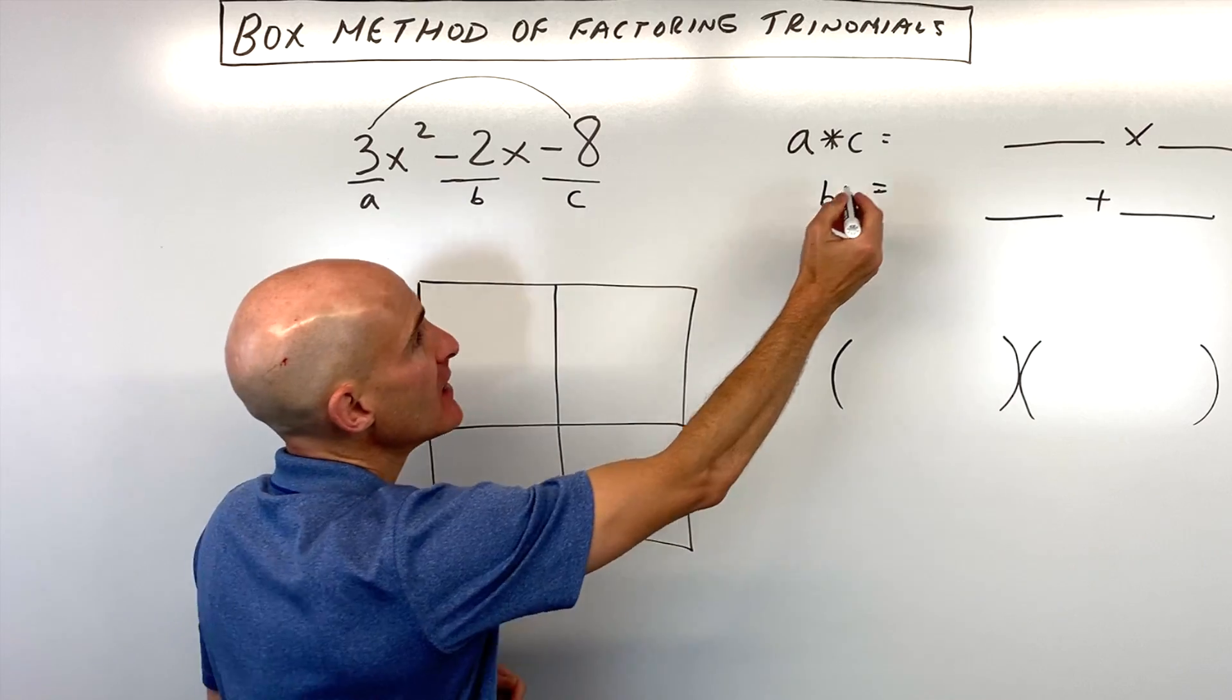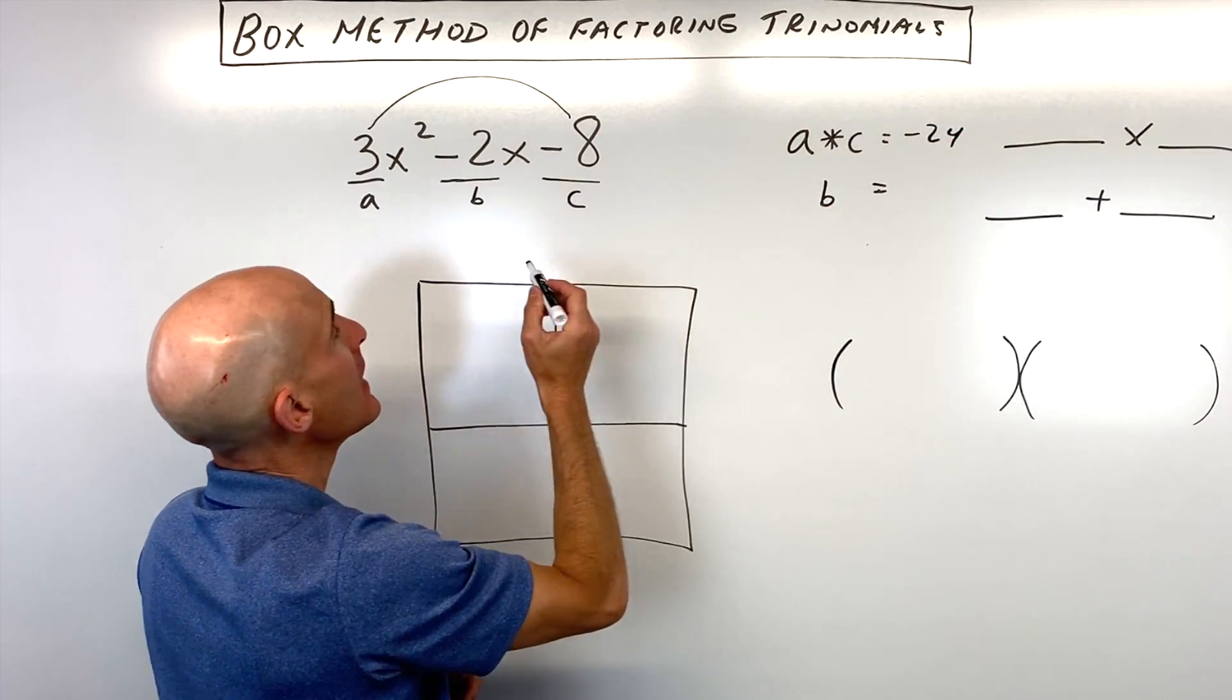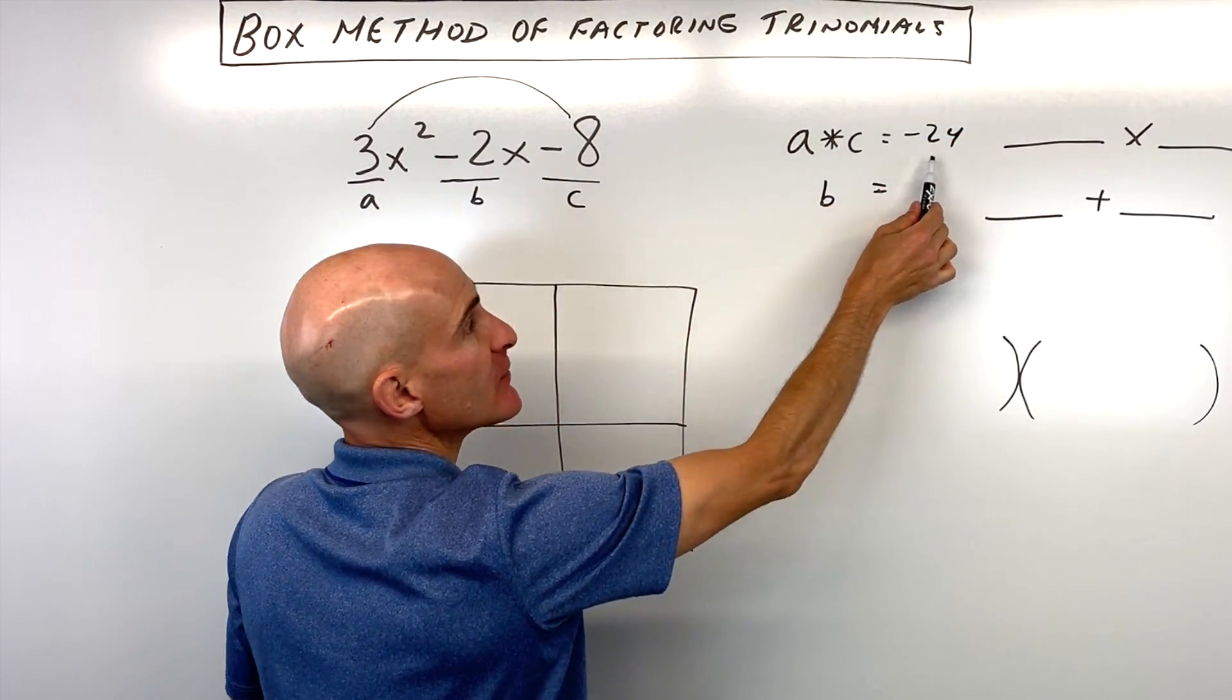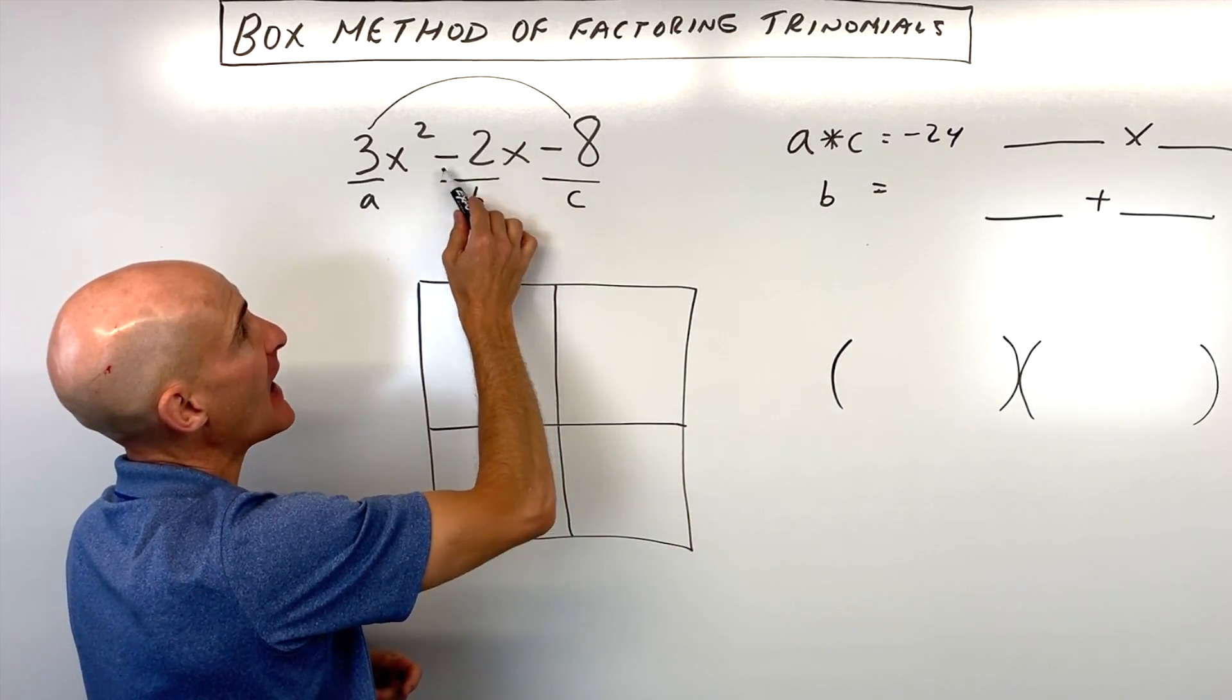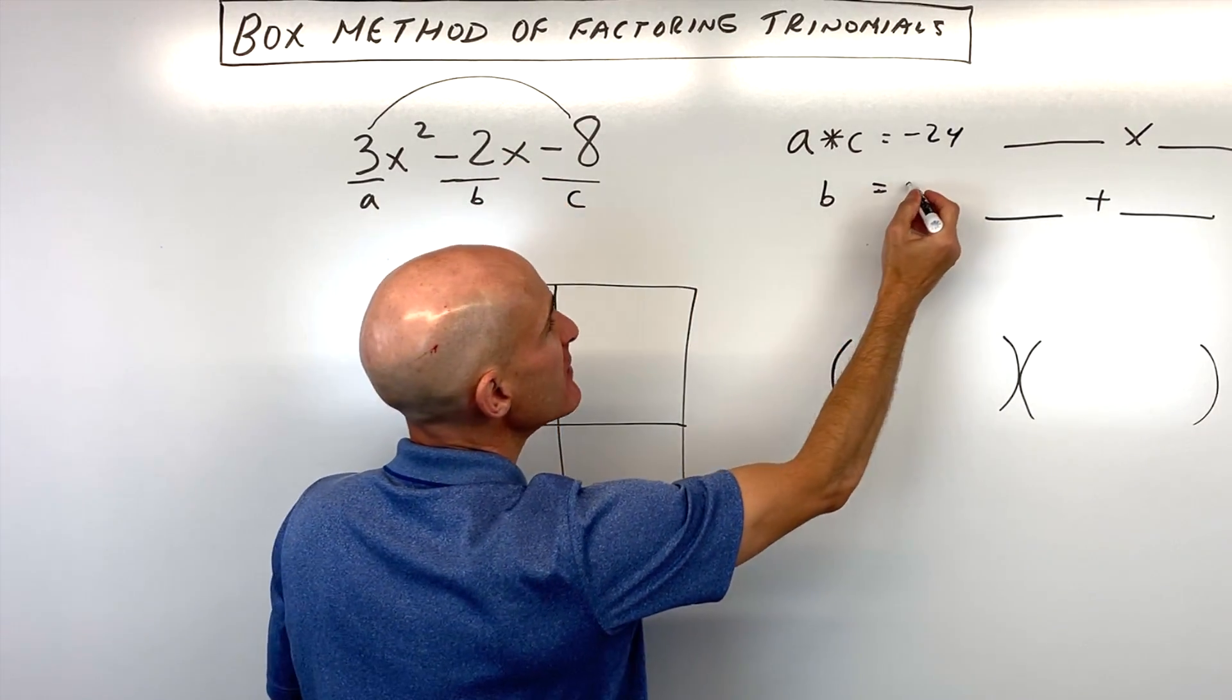So 3 times negative 8, that's negative 24, and so we say what two numbers multiply to negative 24, but they have to add to that middle coefficient, that b value, negative 2.